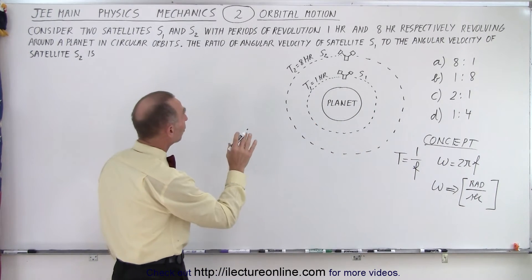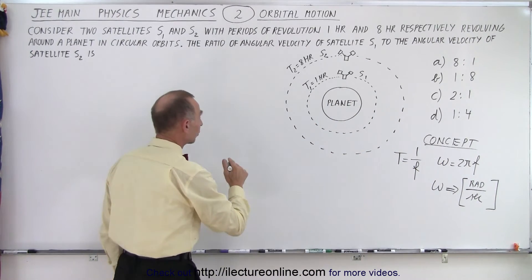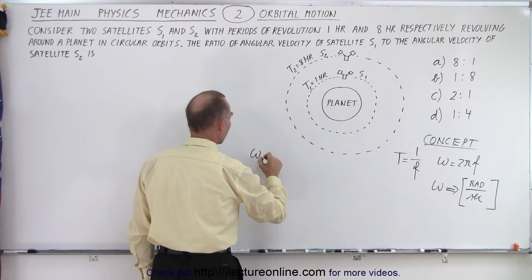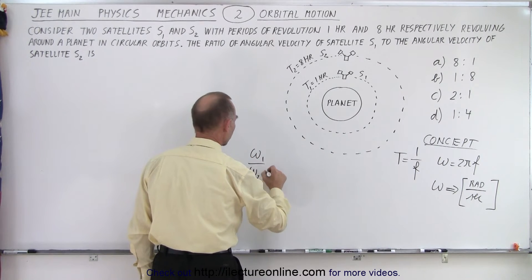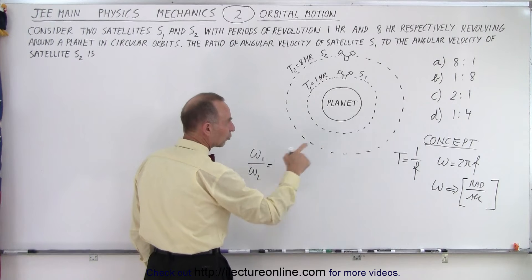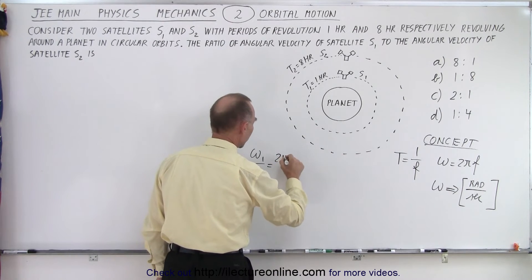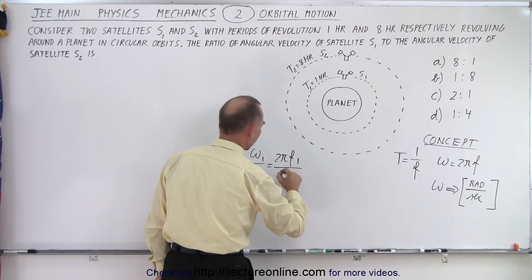So now, we're looking for the ratio of their angular velocity. So we're looking for omega 1 over omega 2. Now, omega can be written as 2 pi f, so it would be 2 pi f1 divided by 2 pi f2.